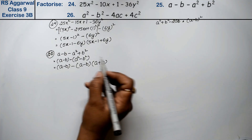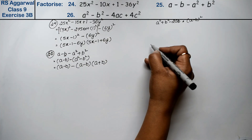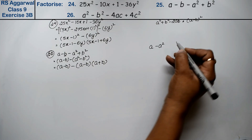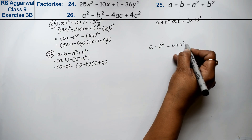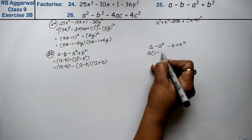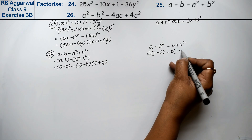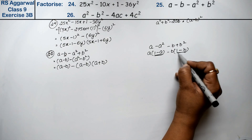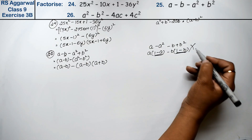Some students might think to rearrange as: a minus a² minus b plus b², then take 'a' common from the first pair to get a(1 - a), and take 'b' common from the second pair to get b(1 - b) but (1 - a) and (1 - b) are not the same, so this method is wrong.